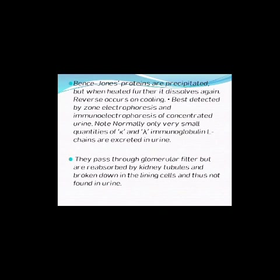Bence Jones proteins are precipitated when the urine sample is heated, but when heated further they dissolve again. On cooling, the process is reversed. They are best detected by zone electrophoresis and immunoelectrophoresis. Concentrated urine is used for these electrophoresis techniques. Normally, only minute quantities of kappa and lambda immunoglobulins are present in urine.